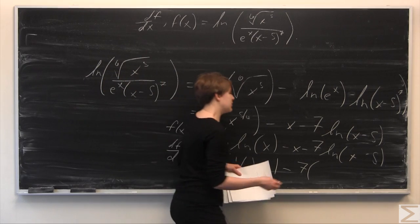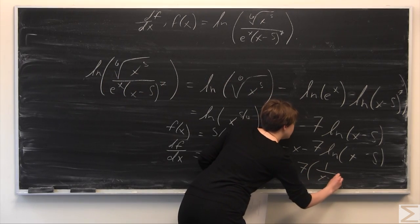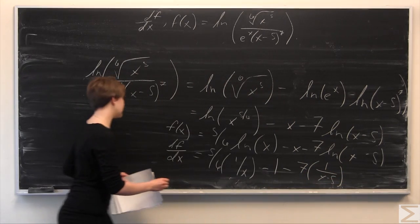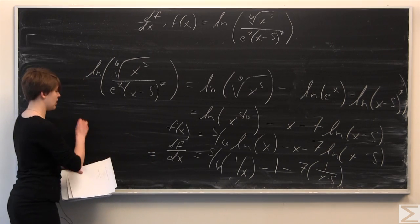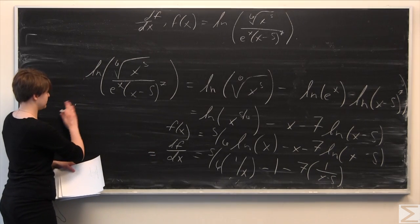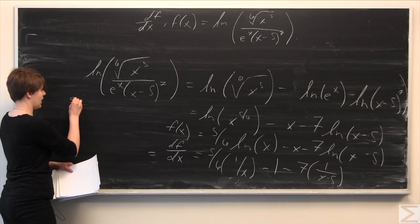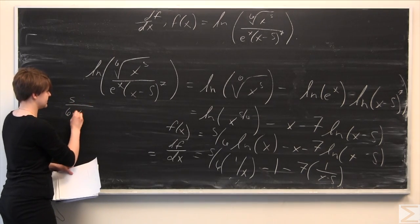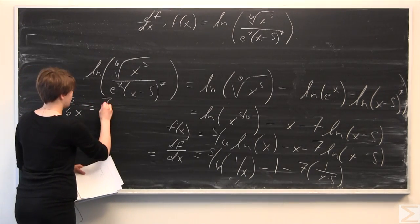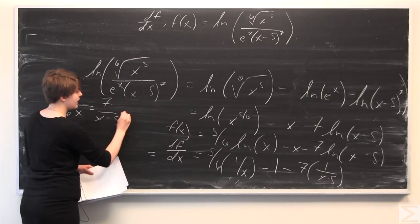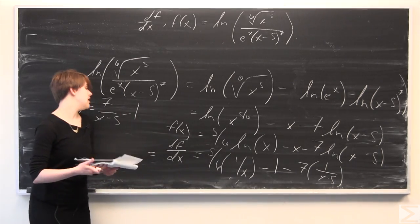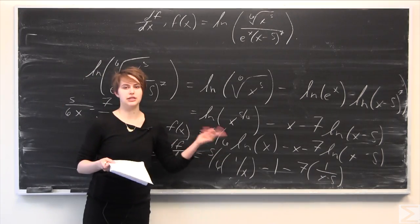We can simplify this one step further and say that this is equal to five over six x minus seven over x minus five, minus one. So that's going to be our derivative.